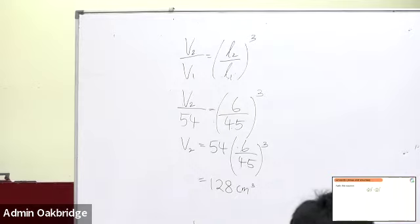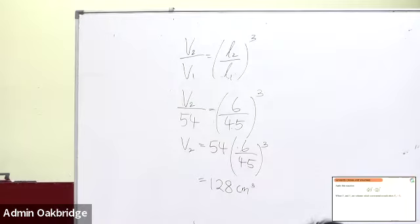Apply this equation: V2 over V1 squared equals A2 over A1 cubed. Be careful with the power — for the volume side, the power is 2, not 3. The power of 3 is at the A2 over A1. So be careful with the power.